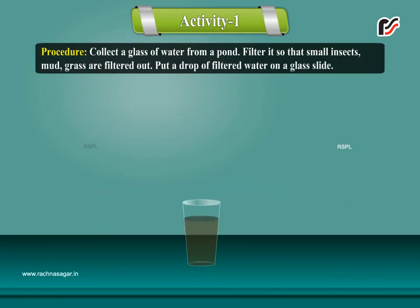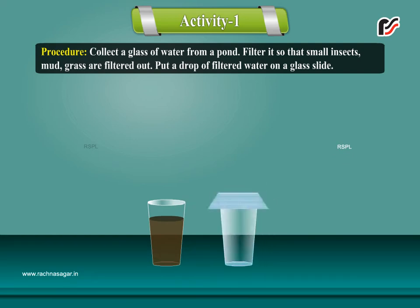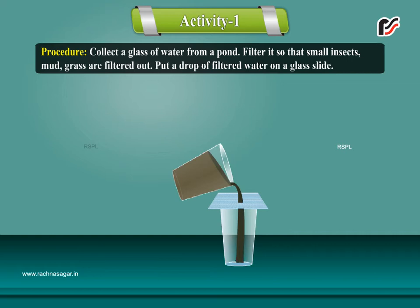Procedure: Collect a glass of water from a pond. Filter it so that small insects, mud, and grass are filtered out.